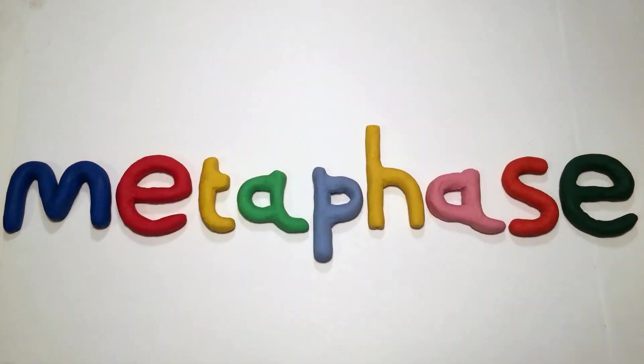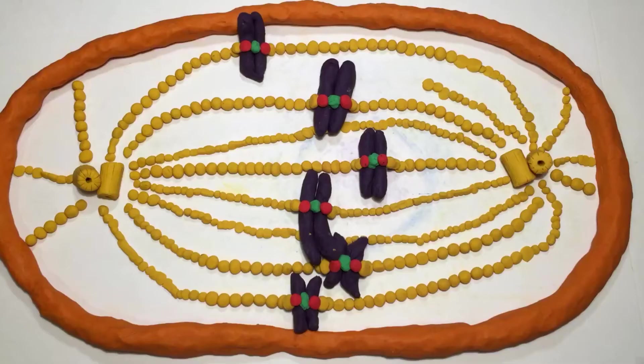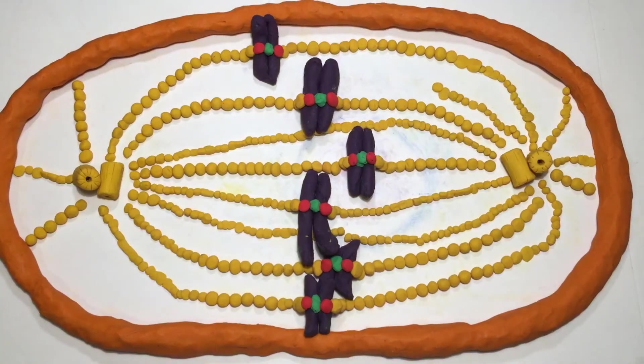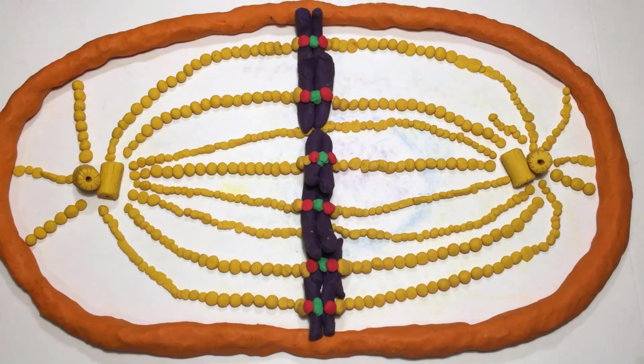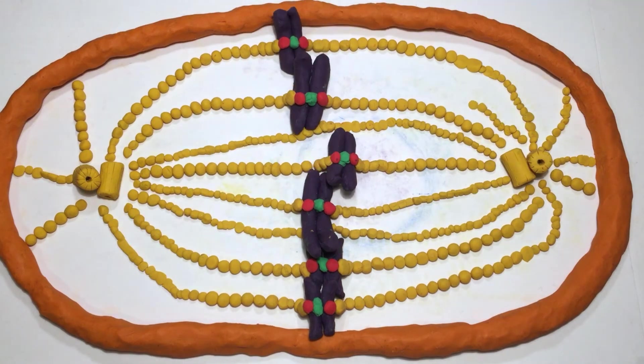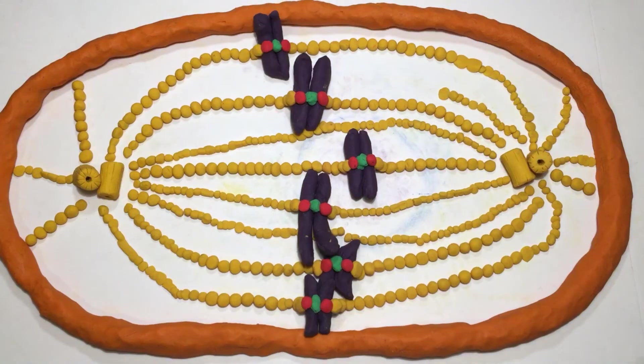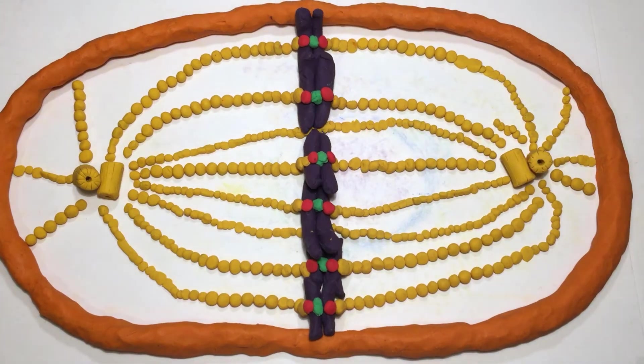Metaphase, which comes from the Greek meta, meaning adjacent, is unsurprisingly the stage when the chromosomes line up along the equator of the cell, also known as the metaphase plate. This happens because the microtubules on either side of the cell are both pulling on the chromosomes, and are essentially in a tug of war with each other.